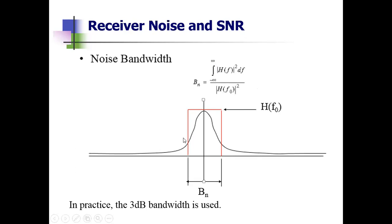The integration ranges from minus infinity to infinity, which is not practically realizable. This equation states that the noise bandwidth is the bandwidth of an equivalent rectangular filter whose noise power output equals that of the filter with frequency response H(f). A reasonable approximation for Bn is the half-power bandwidth. In practice, the 3 dB bandwidth B is used — not the ideal Bn — to approximate the noise bandwidth Bn.